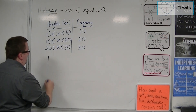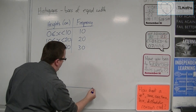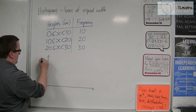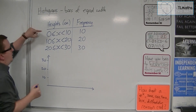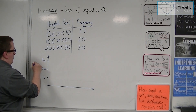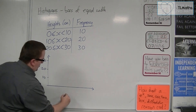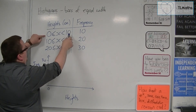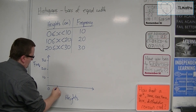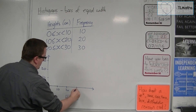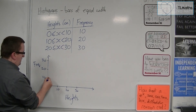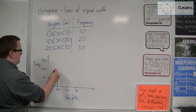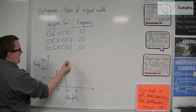So how would I draw this? I would have a y-axis as my frequency — so let's say 10, 20, 30 — and my x-axis for the heights. So the y-axis is frequency and the x-axis is heights, going from 0 to 10 to 20 to 30. Between 0 and 10, the bar is at height 10. From 10 to 20, the bar is at 20. And from 20 to 30, the bar is at 30.